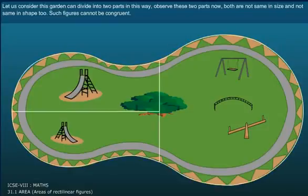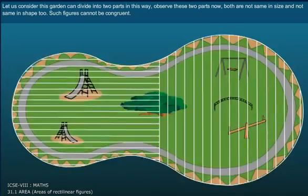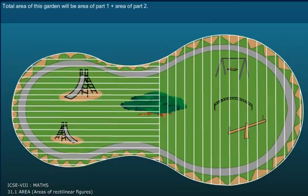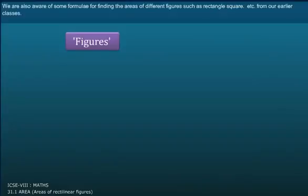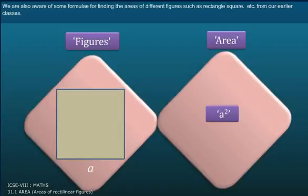Now let us consider this garden divided into two parts. Observe these two parts — both are not same in size and not same in shape too, so such figures cannot be said as congruent. The total area of this garden will be Area of Part 1 plus Area of Part 2. We are also aware of some formulas for finding the areas of different figures such as rectangle and square from earlier classes.